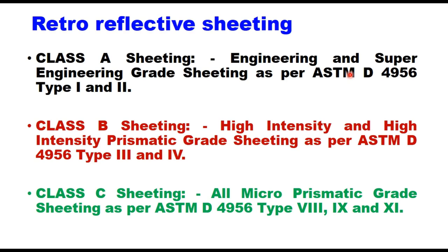Retroreflective sheeting used on signs will be white or colored sheeting having a smooth outer surface with the property of retroreflection over its entire surface. Retroreflective sheets are divided into three classes. Class A sheeting is engineering and super engineering grade sheeting as per ASTM D4956, types 1 and 2. Class B sheeting can be type 3 and type 4. Class C sheeting covers all microprismatic grade sheeting as per ASTM D4956 types 8, 9 and 11.